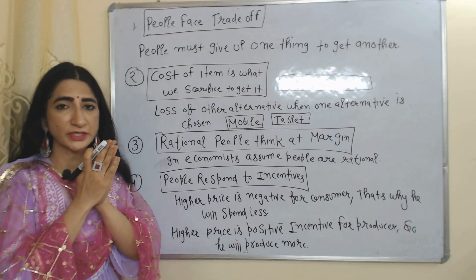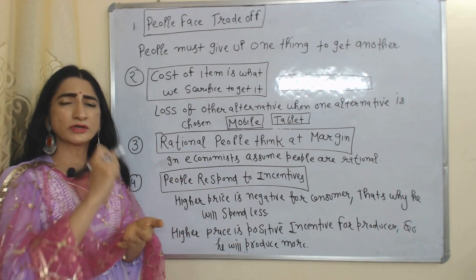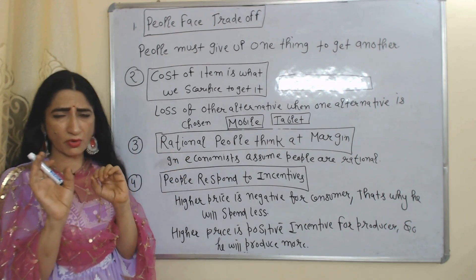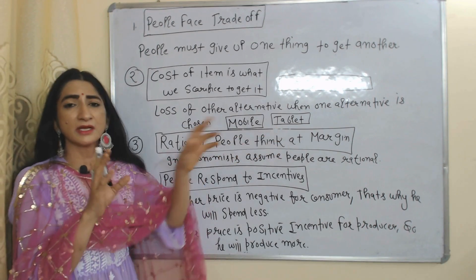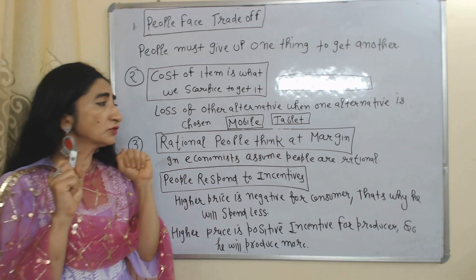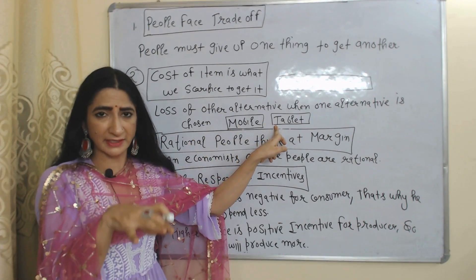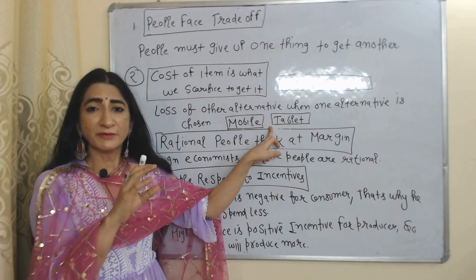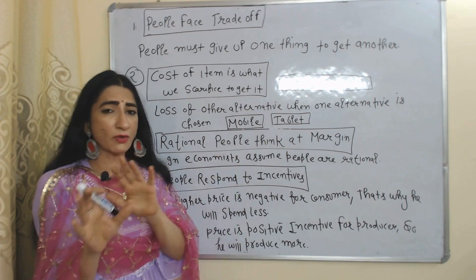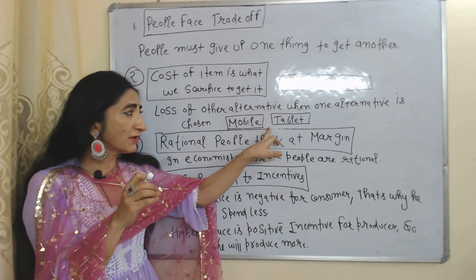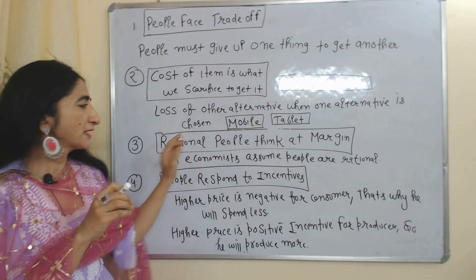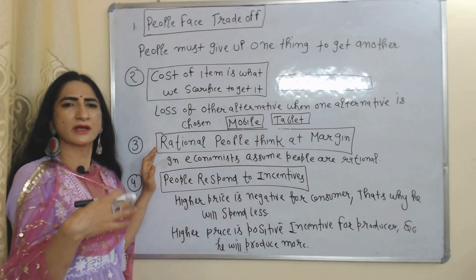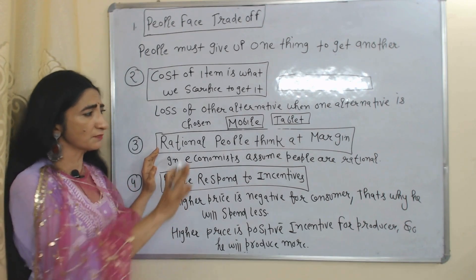The next principle is the cost of an item is what we sacrifice to get it. This mainly talks about opportunity cost. Opportunity cost means the loss of other alternatives when one alternative is chosen. For example, a producer has only two alternatives: either he can produce a mobile or a tablet. Suppose in order to produce a mobile he gave up a tablet — the opportunity cost of producing a mobile is the sacrifice of income which he could earn from the sale of the tablet, but now he can't because he gave up production of the tablet in order to produce mobile.